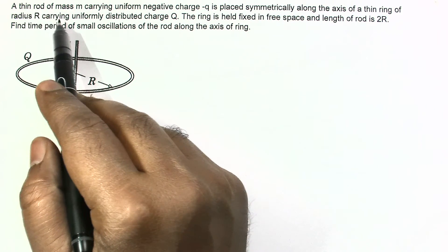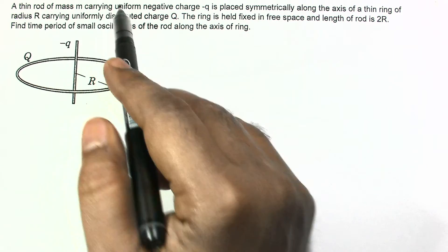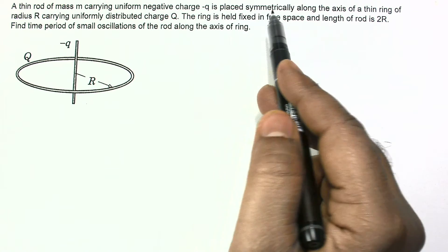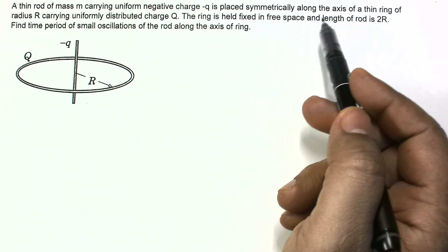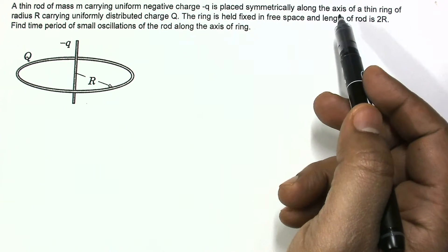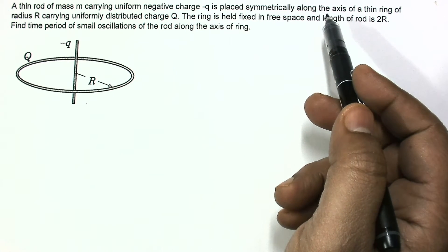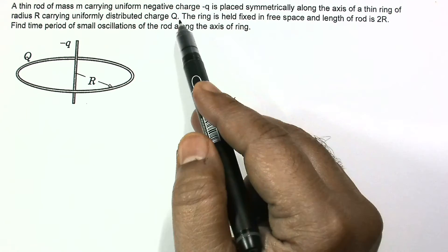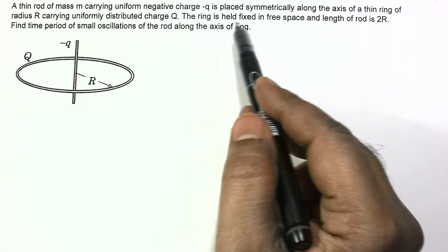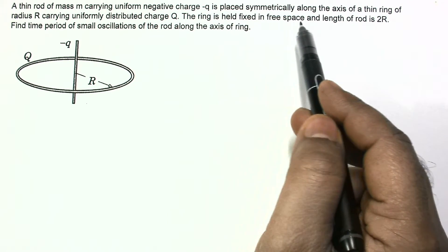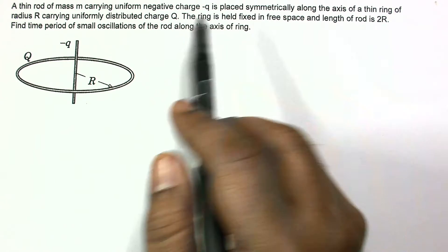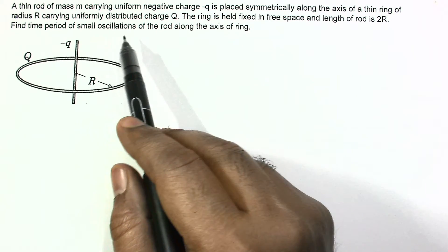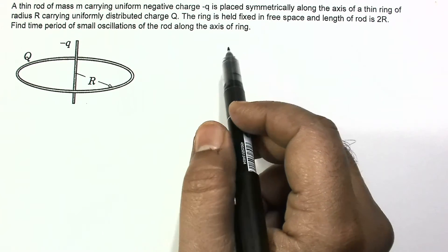In this question, a thin rod of mass m carrying uniform negative charge minus q is placed symmetrically along the axis of a thin ring of radius r carrying uniformly distributed charge capital Q. The ring is held fixed in free space and the length of the rod is 2r. Find the time period of small oscillations of the rod along the axis of the ring.